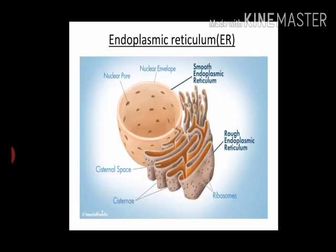Coming to one of the cell organelles present in animal cells — that is the endoplasmic reticulum, or ER for short. This endoplasmic reticulum is a very large network of membrane-bound tubes and sheets. You can see the structure in this slide. It is just beside the nucleus, appearing in a sheet form, with membrane-bound tubes around these sheet-like structures. It also looks like long tubules or round sac-like structures, which are called vesicles.